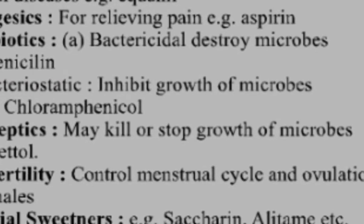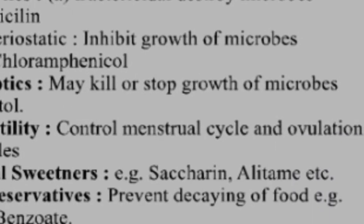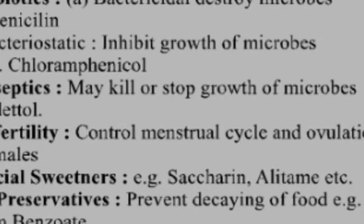Antifertility drugs control the menstruation cycle and ovulation of females. These drugs are used to control fertility — to stop the menstruation cycle and ovulation — and they are especially for women. Artificial sweeteners, like saccharine — saccharine is sweeter than sugar.